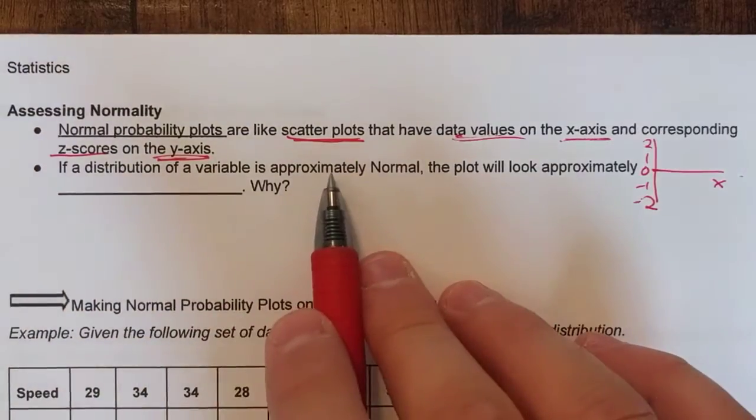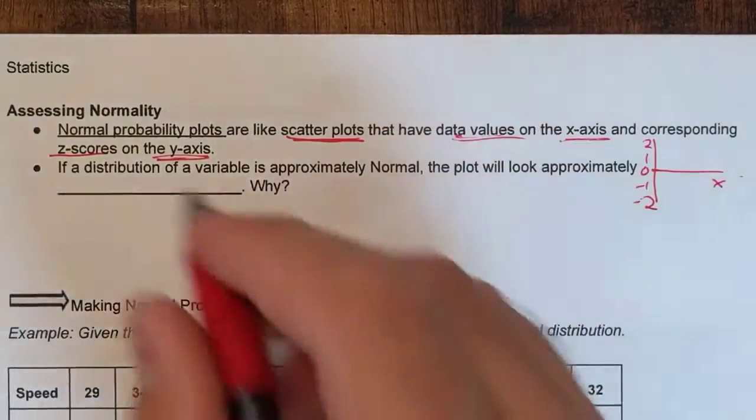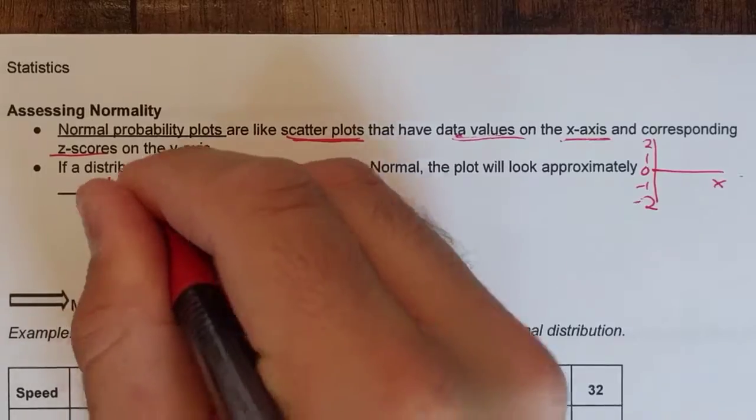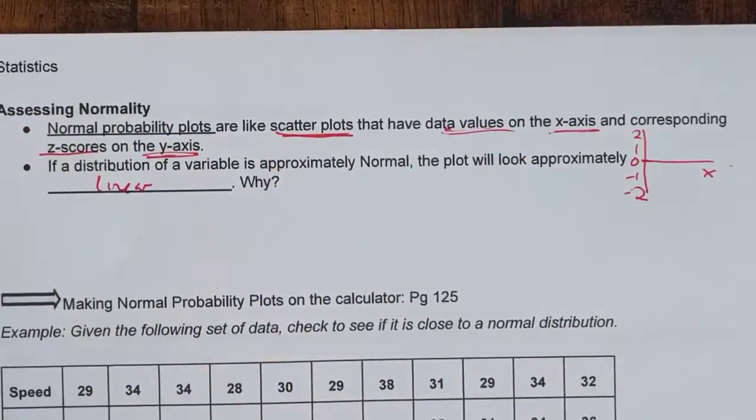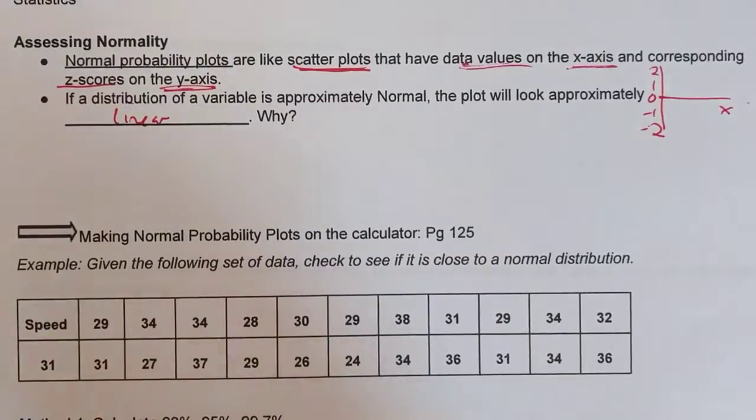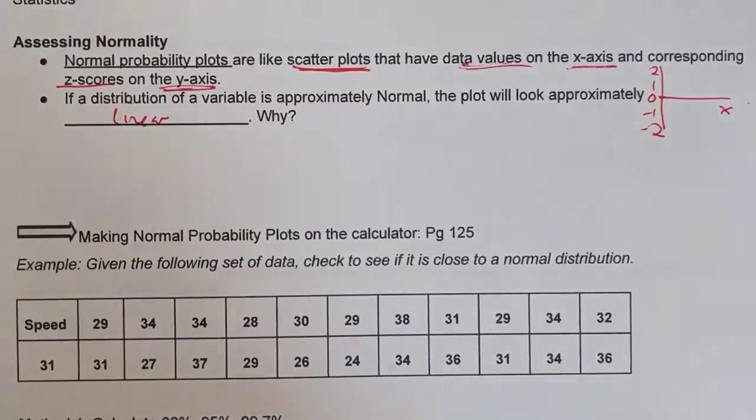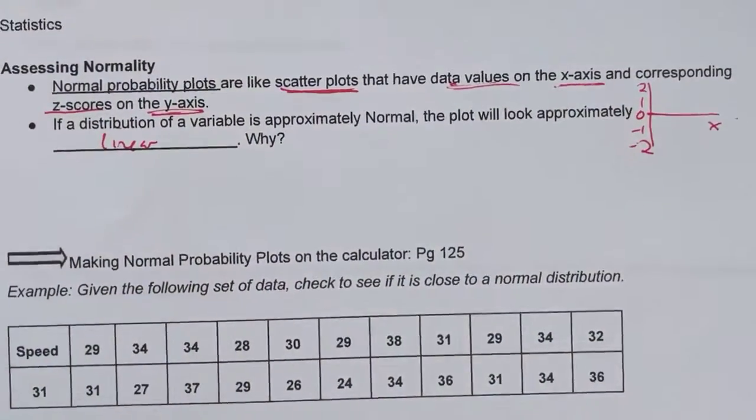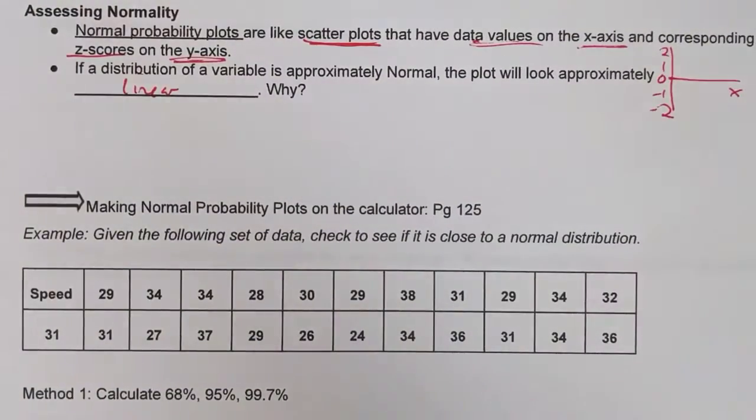If a distribution of a variable is approximately normal, the plot will look approximately linear. Why? The reason is because if you have a curve in your normal probability plot that means you either have a lot of data bunched up around z-scores or you have very little data across z-scores. So either way it's going to be a skewed distribution and you don't want that if you're trying to assess for normality.